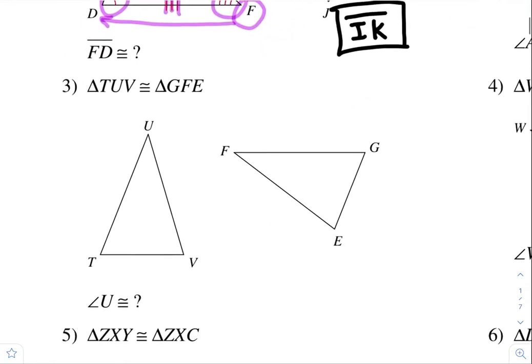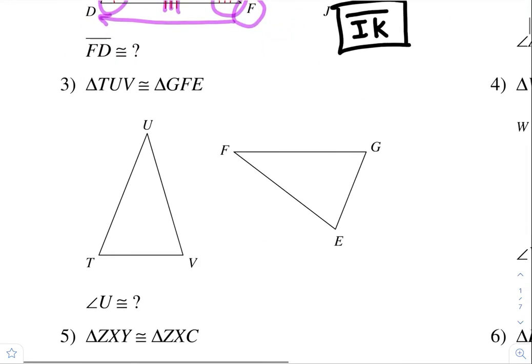Number three. It says you have these two triangles congruent to each other. Angle U is congruent to what? Well, angle U is in between T and V. So its corresponding angle that it's congruent to is angle F.